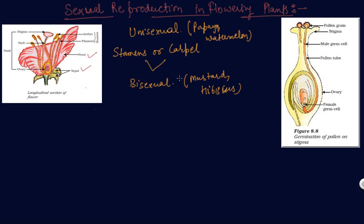Stamen is the male reproductive part and carpel is the female reproductive part. It produces pollen grains that are yellowish in color. These pollen grains are produced here.